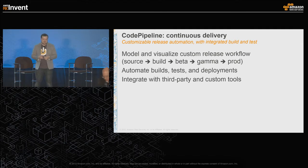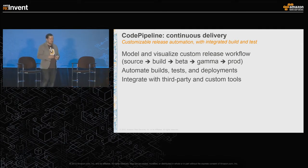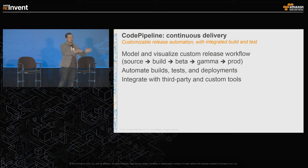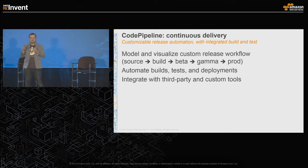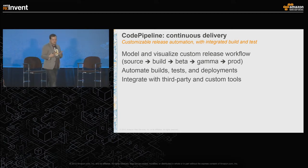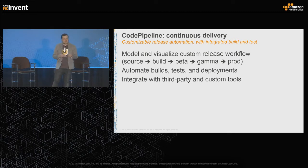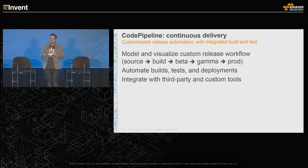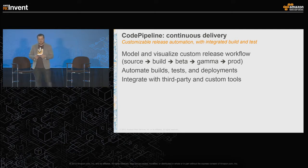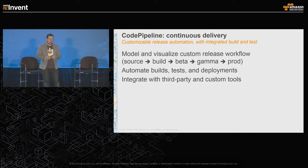CodePipeline is our Continuous Delivery service. It allows you to model and visualize your workflow — taking code from source control through deployment, load testing, Jenkins unit and functional testing, and on to a production deploy. It integrates with third-party tools and supports custom actions through a worker process if something isn't natively supported, allowing you to automate the entire process.